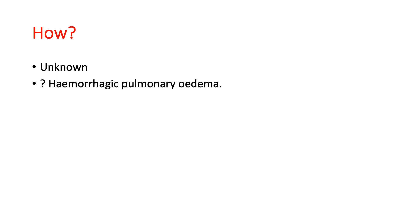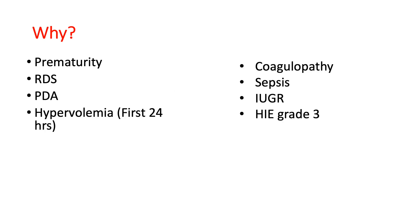How does it happen? We think it's more likely happening due to hemorrhagic pulmonary edema. The risk factors for developing pulmonary hemorrhage include prematurity, RDS, PDA, and hypervolemia — especially in the first 24 hours — as well as coagulopathy, sepsis, intrauterine growth retardation, and hypoxic ischemic encephalopathy grade 3.